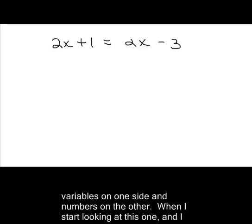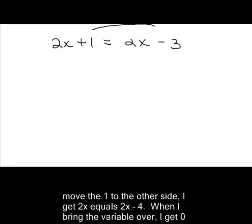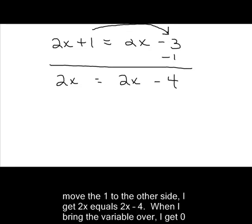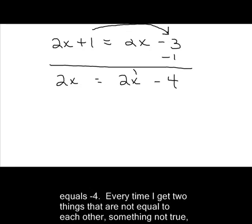So when I start looking at this one and I move my number over to the other side, it was a plus one, I make it a minus one, I end up with 2x equals 2x minus 4. Now when I bring this other variable over,